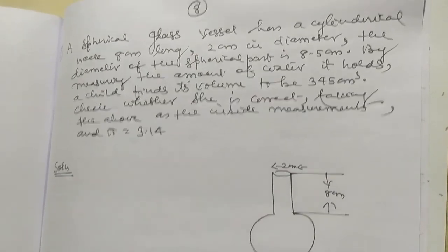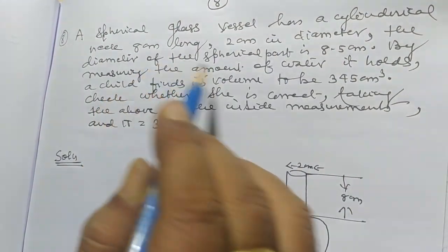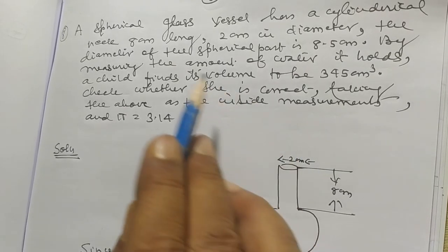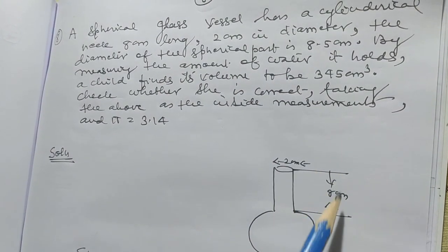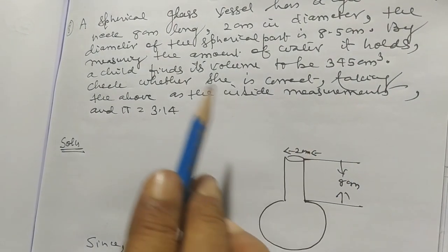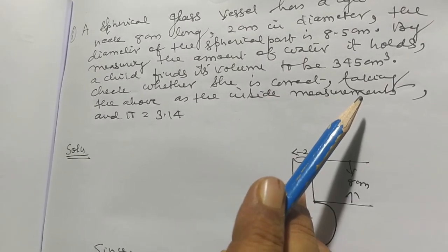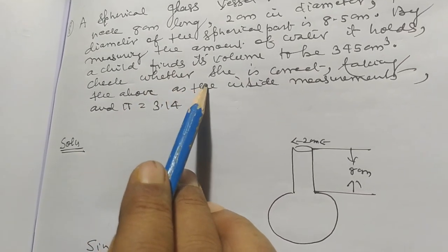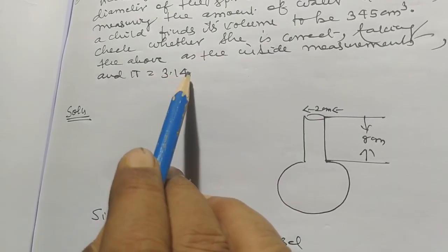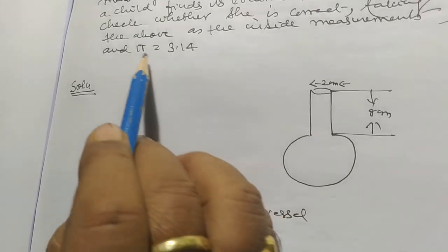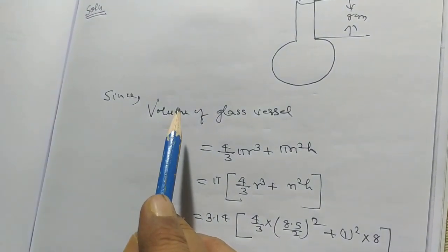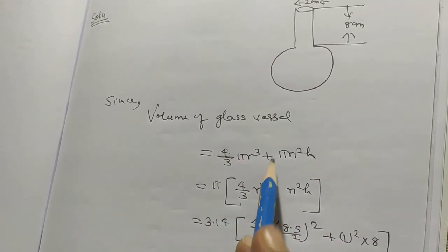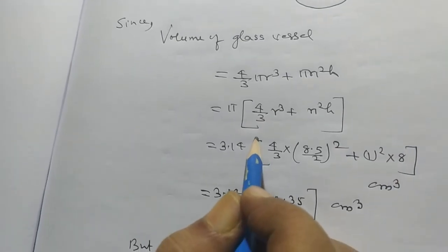Now problem number eight. A spherical glass vessel has a cylindrical neck eight centimeters long and two centimeters in diameter. The diameter of the spherical part is eight point five centimeters. By measuring the amount of water it holds, a child finds its volume to be three hundred forty-five centimeter cube. Check whether this is correct, taking the measurements as inside measurements and pi equal to three point one four.